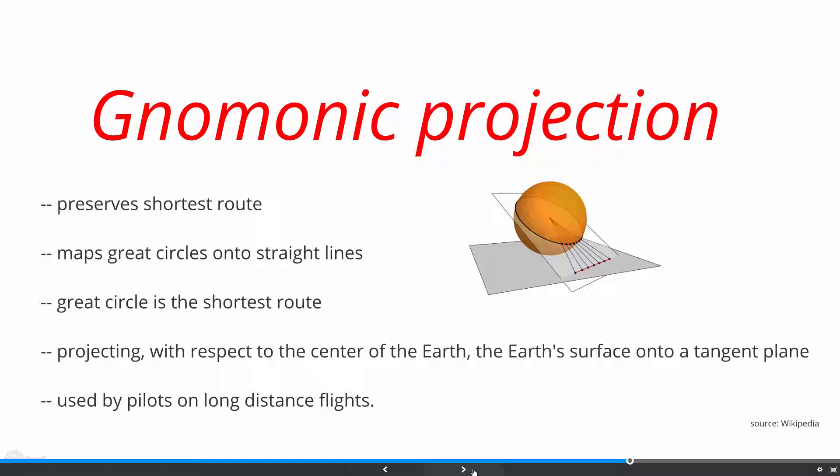Gnomonic projection maps the great circles from the Earth's surface with respect to the center of the Earth onto straight lines of a tangent plane, as shown in the figure. Hence, any line segment on a Gnomonic map shows the shortest route between the segment's two endpoints. This projection is used by pilots on long-distance flights.